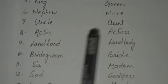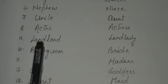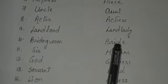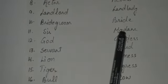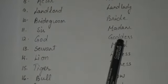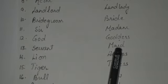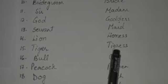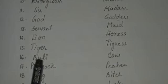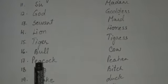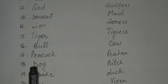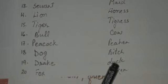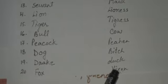Husband is a man. Landlord is a man, landlady is a woman. Bridegroom is male, bride is a woman. 'Sir', opposite is 'madam'. 'God', opposite is 'goddess'. Servant is male, maid is female. Lion is male, lioness is female. Tiger is male, tigress is female. Bull is male, its opposite is cow. Peacock is male, peahen is feminine. Dog is male, bitch is feminine. Drake is masculine and duck is feminine. Fox and its opposite is vixen.